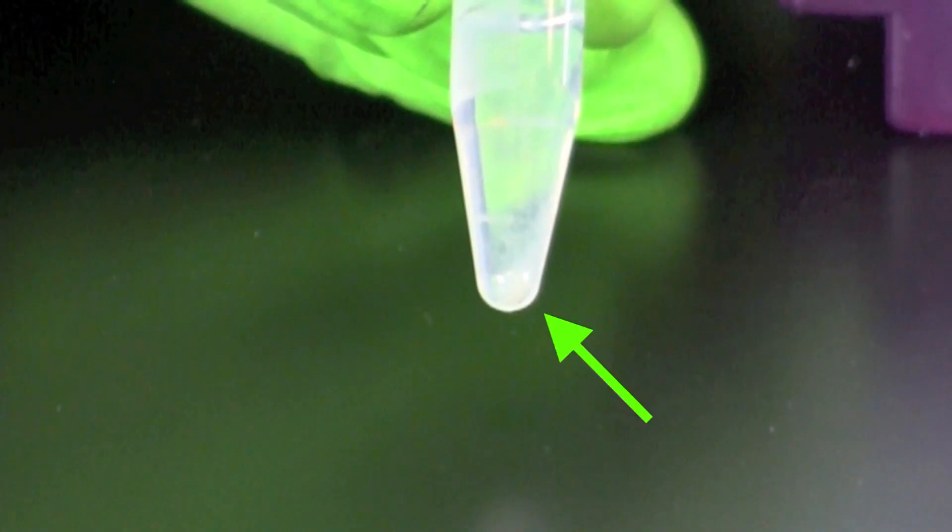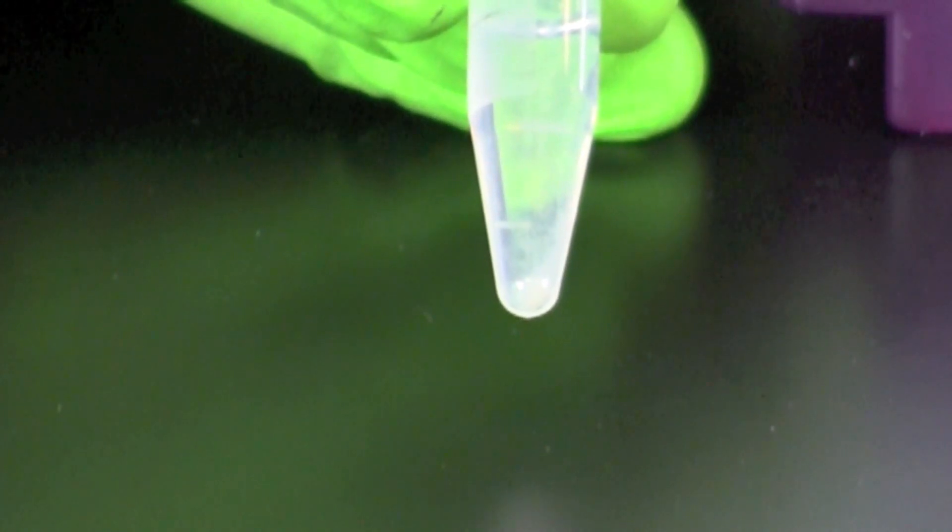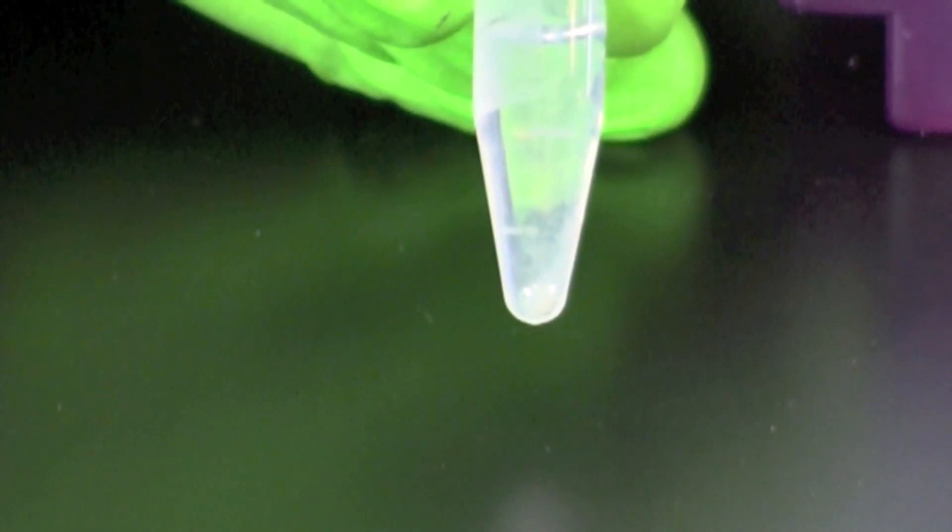If the pellet is smaller than a match head, remove the supernatant, add another 1 milliliter of mouth rinse to the same tube, and repeat the centrifugation.